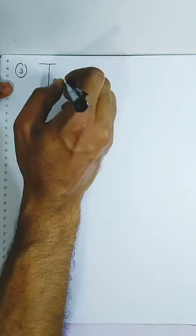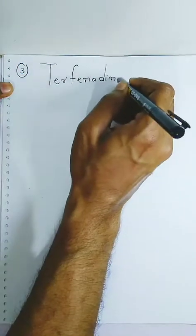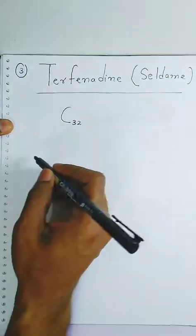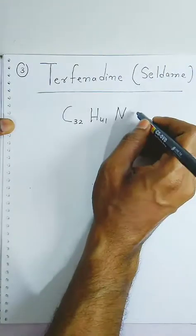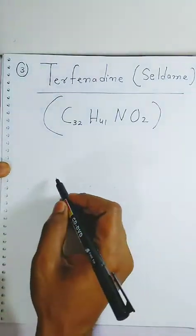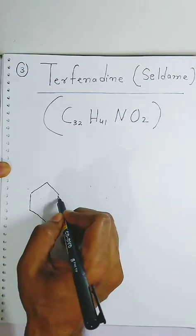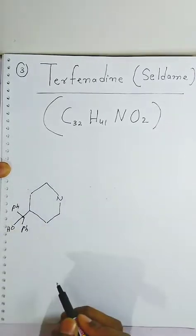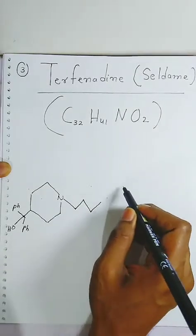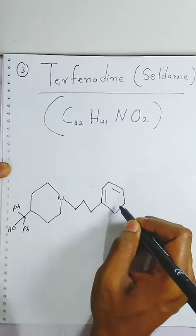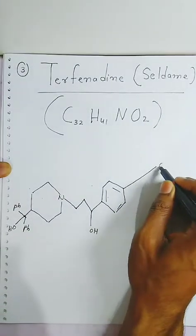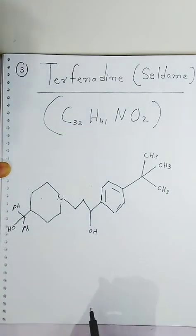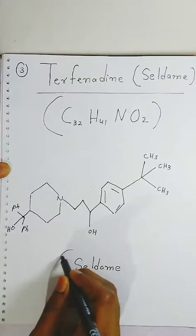That anti-histamine is called terfenadine, with the common name Seldane. When you see the molecular formula, the total number of carbon is 32, hydrogen is 41, nitrogen is 1, and oxygen is 2. It is a heterocyclic ring carrying 1 nitrogen. It contains 1 hydroxyl group and 2 phenyl groups. It is connected with a methyl group — when you count the total number of carbons, there will be 32. This is the structure of Seldane, also used as an anti-histamine.